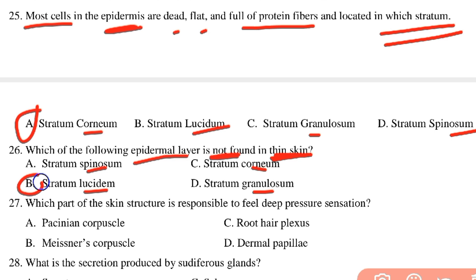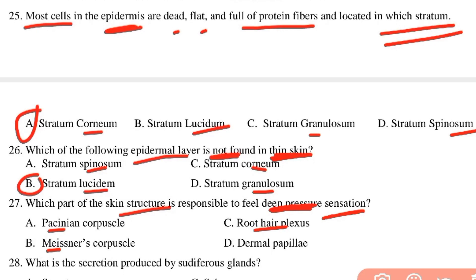Which part of the skin structure is responsible for feeling deep pressure? It is a sensation receptor. The options are Pacinian corpuscle, Meissner's corpuscle, root hair plexus, and dermal papillae. The Pacinian corpuscle is responsible for deep pressure sensation, while Meissner's corpuscle is responsible for light touch.